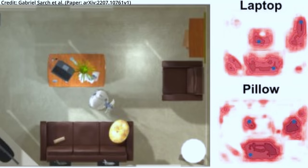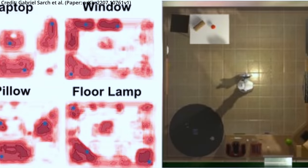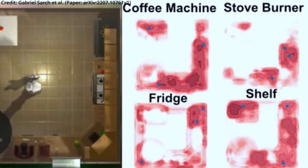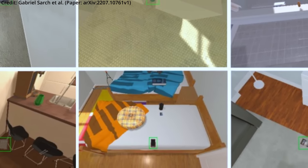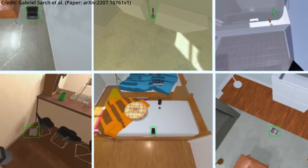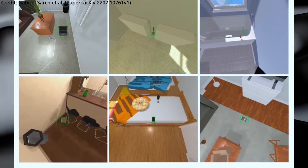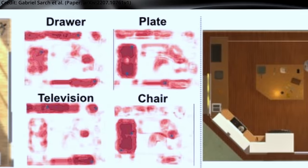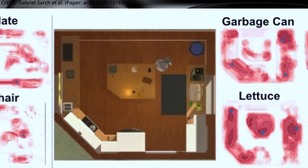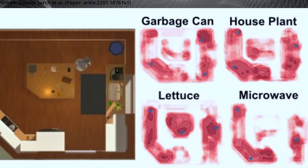Although Tidy has shown promising results, there are still several limitations to be addressed in future research. For instance, artificial intelligence does not consider the open or closed states of items, nor does it incorporate their 3D posture during the tidying process. Additionally, this simulated chaos created for testing may not be representative of real-life clutter.